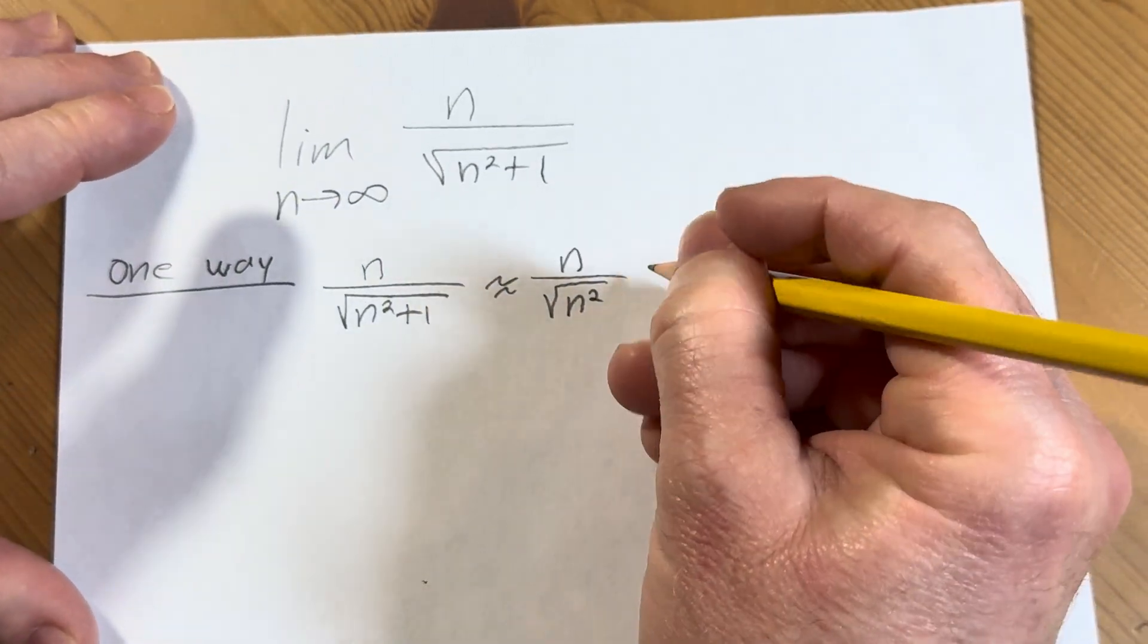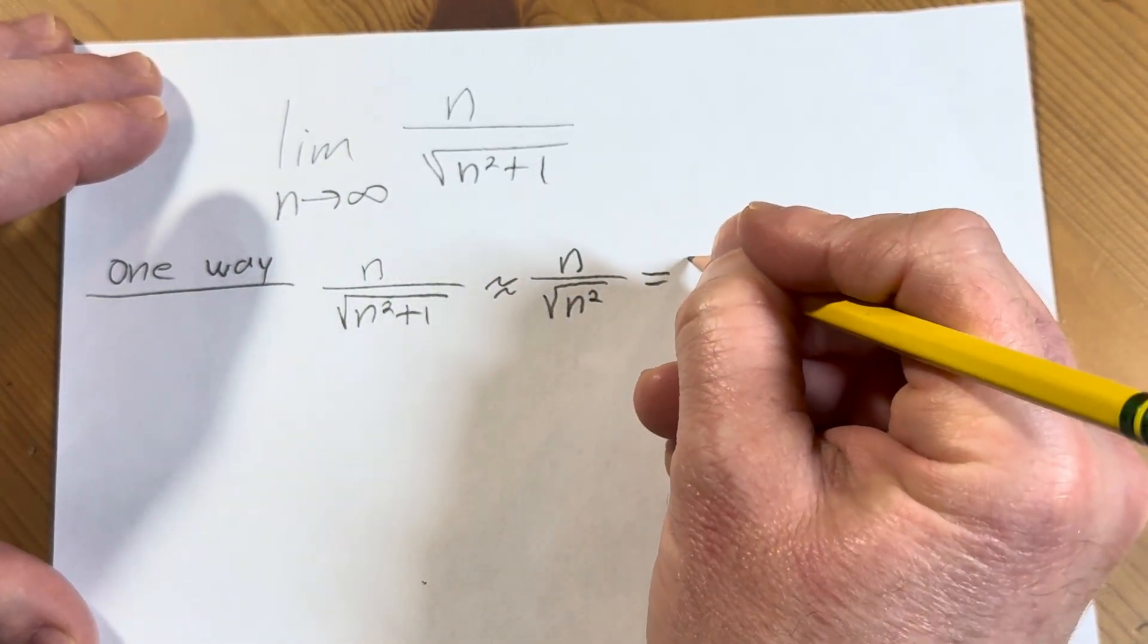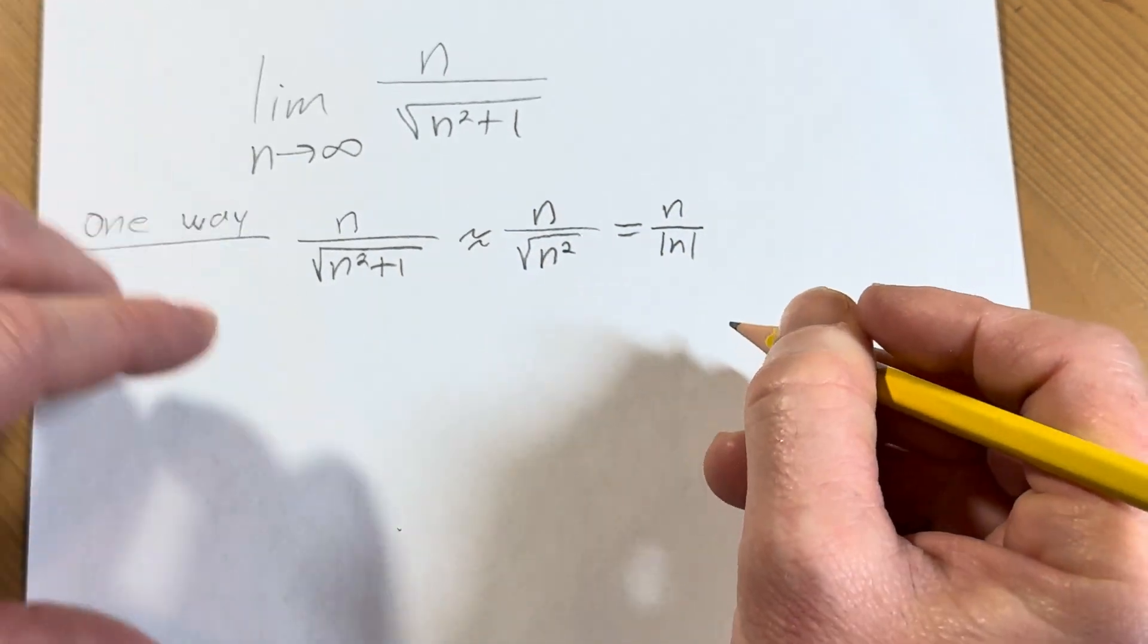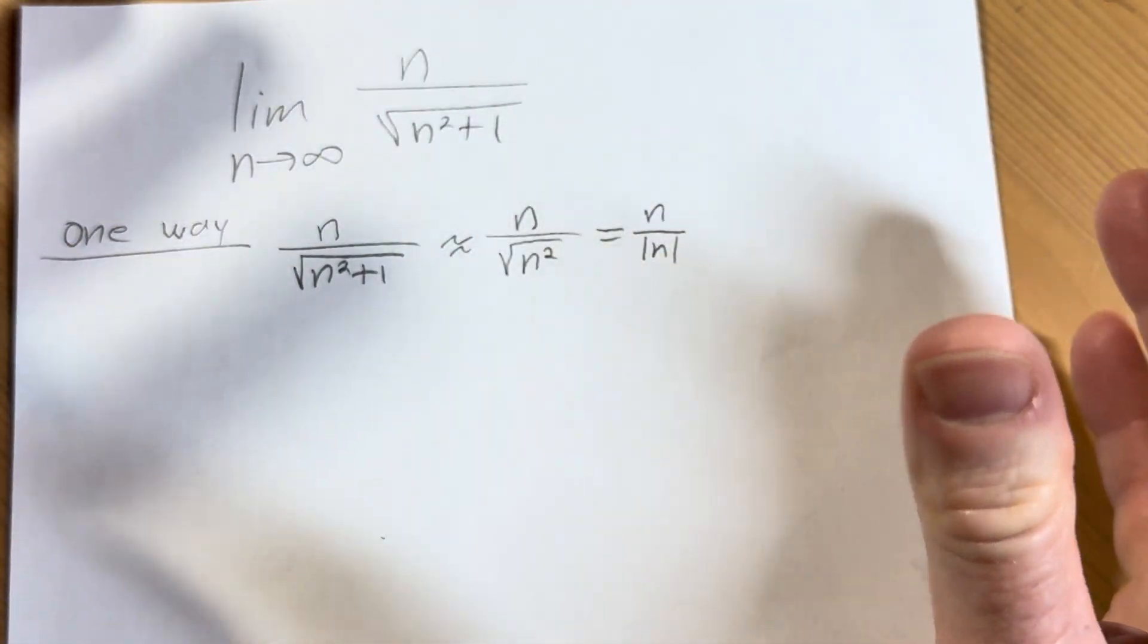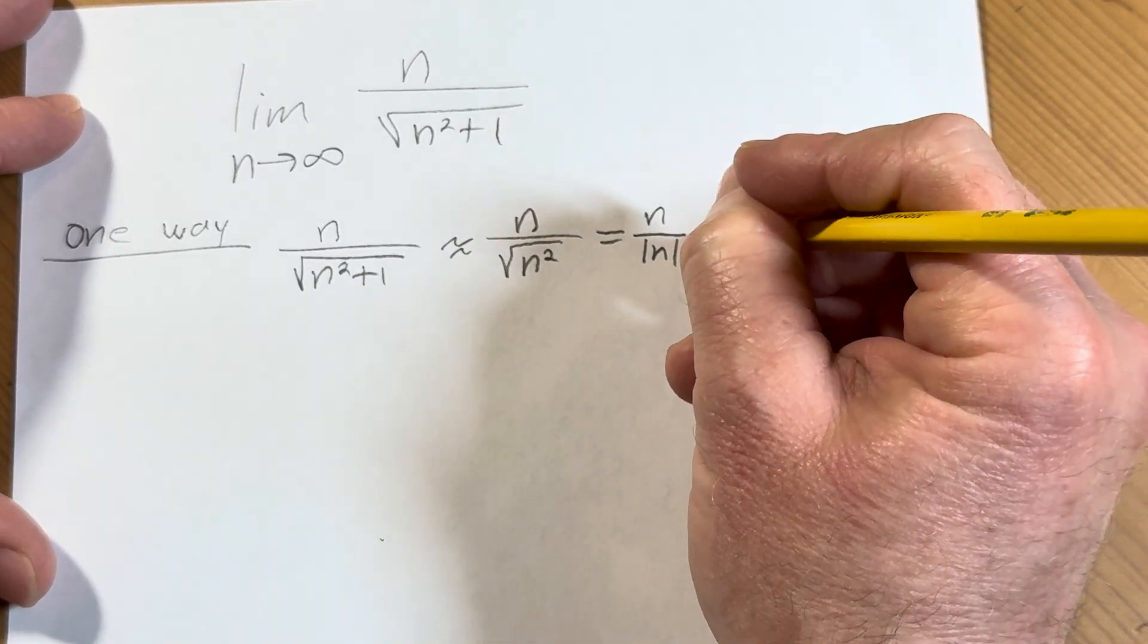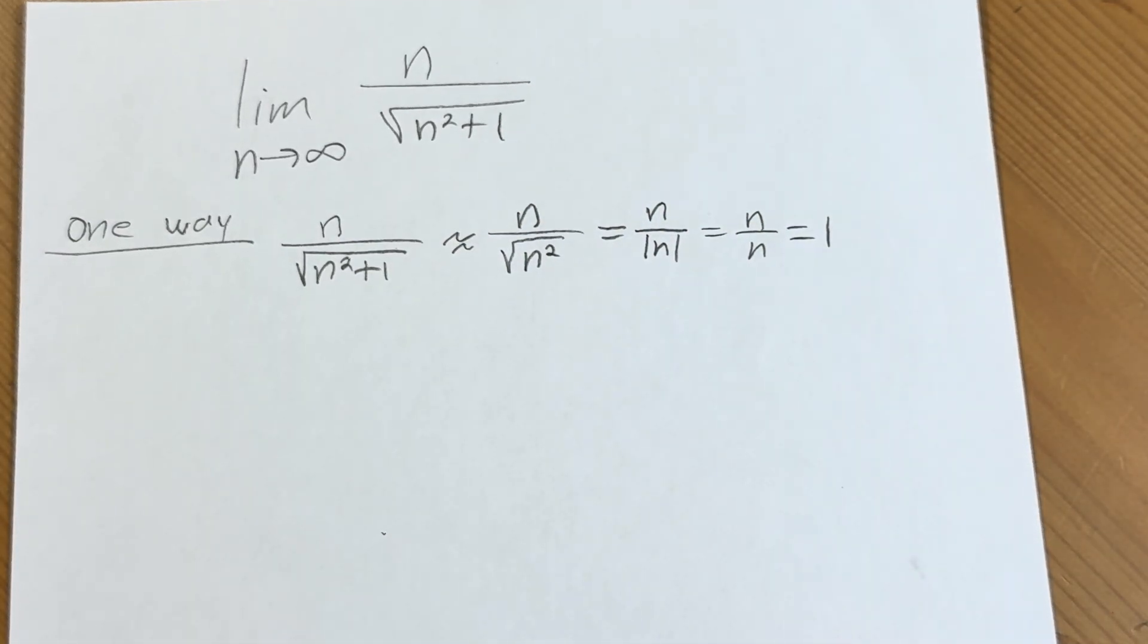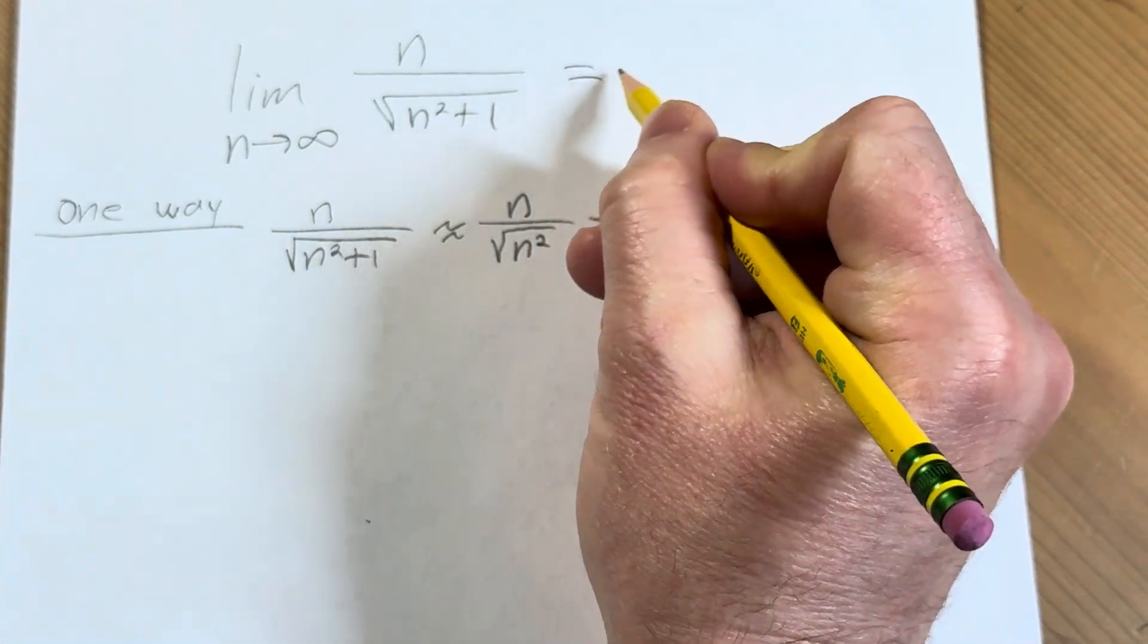And again, n is continuing to grow, but at this point we can just use some basic mathematics, right? And we know that this is true. But n is growing, so it's certainly positive, right? So this is going to be equal to 1.